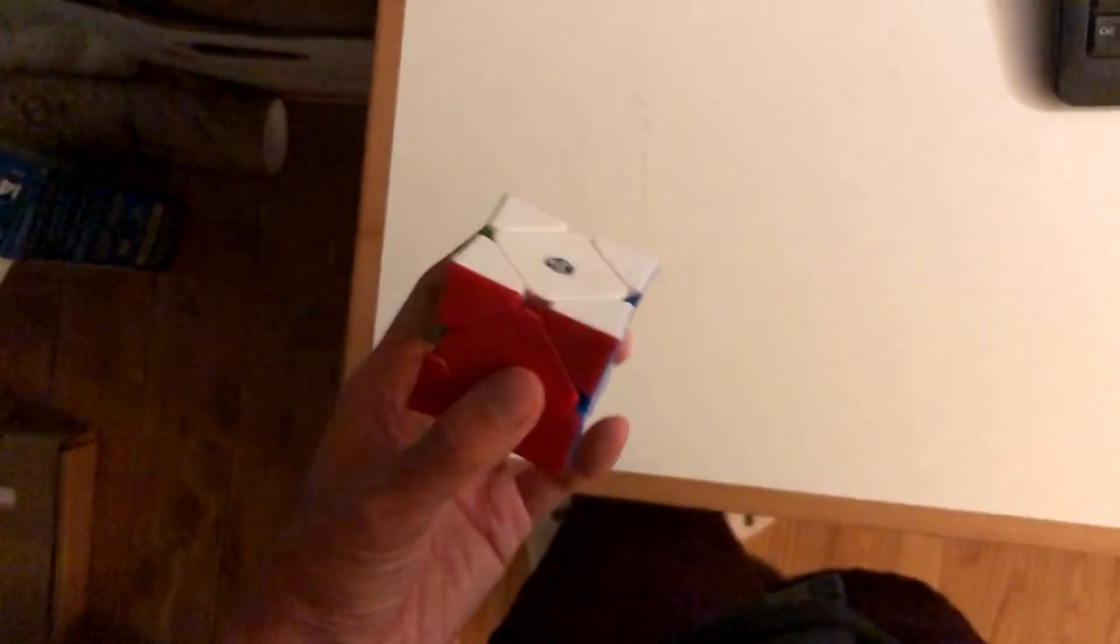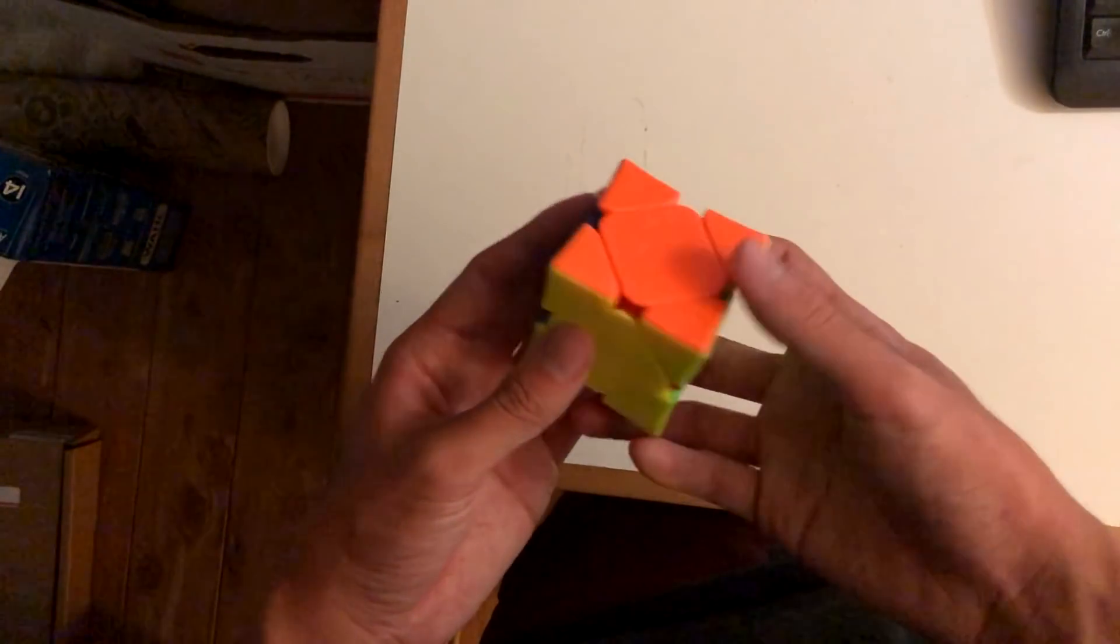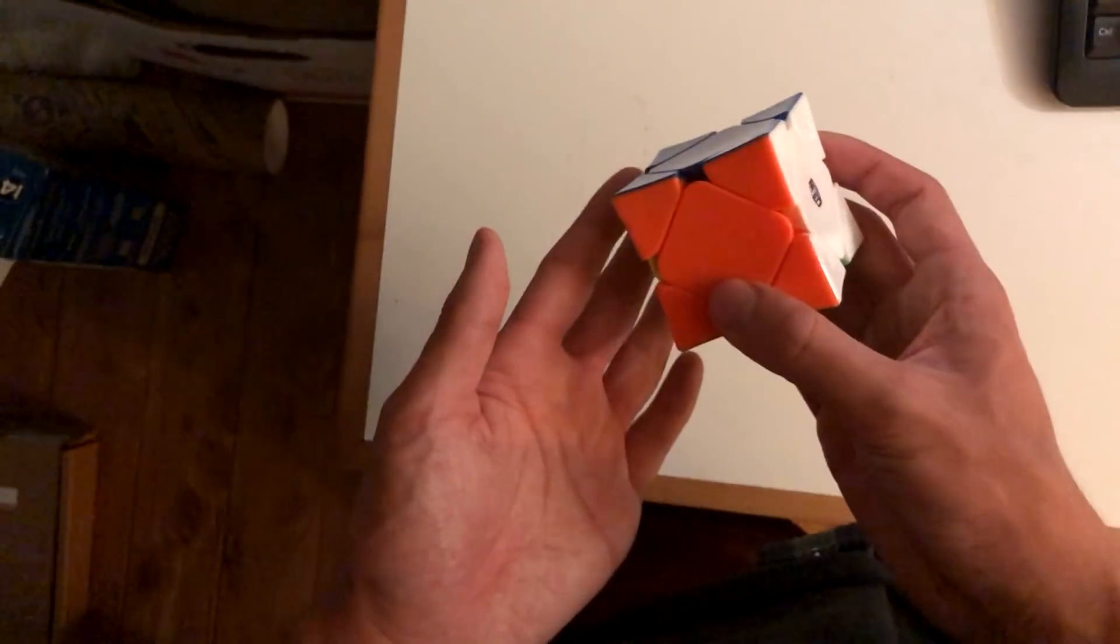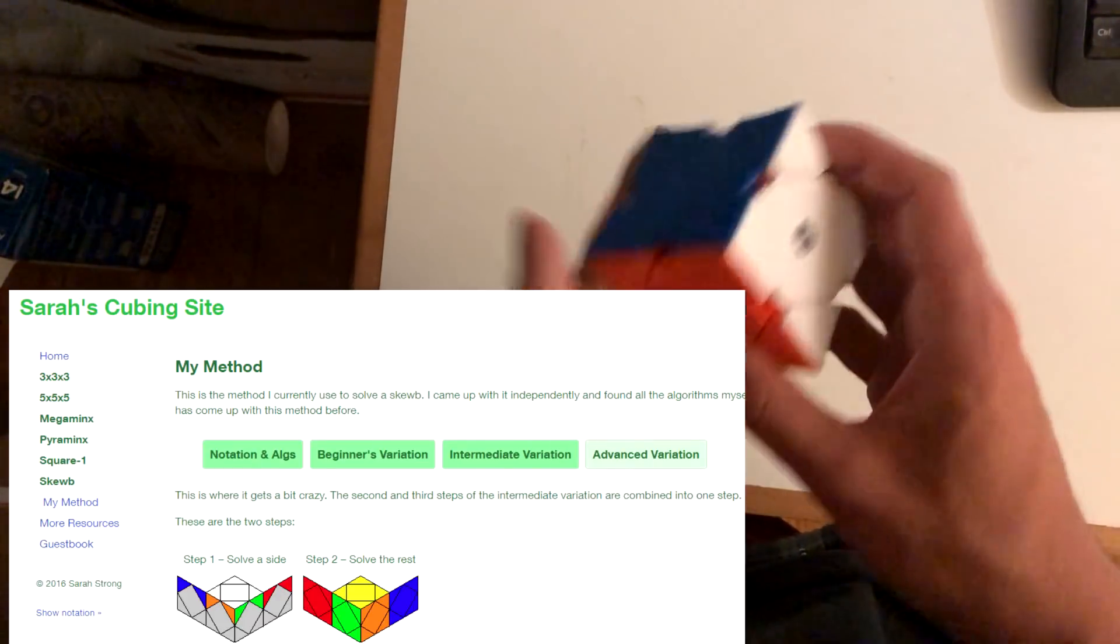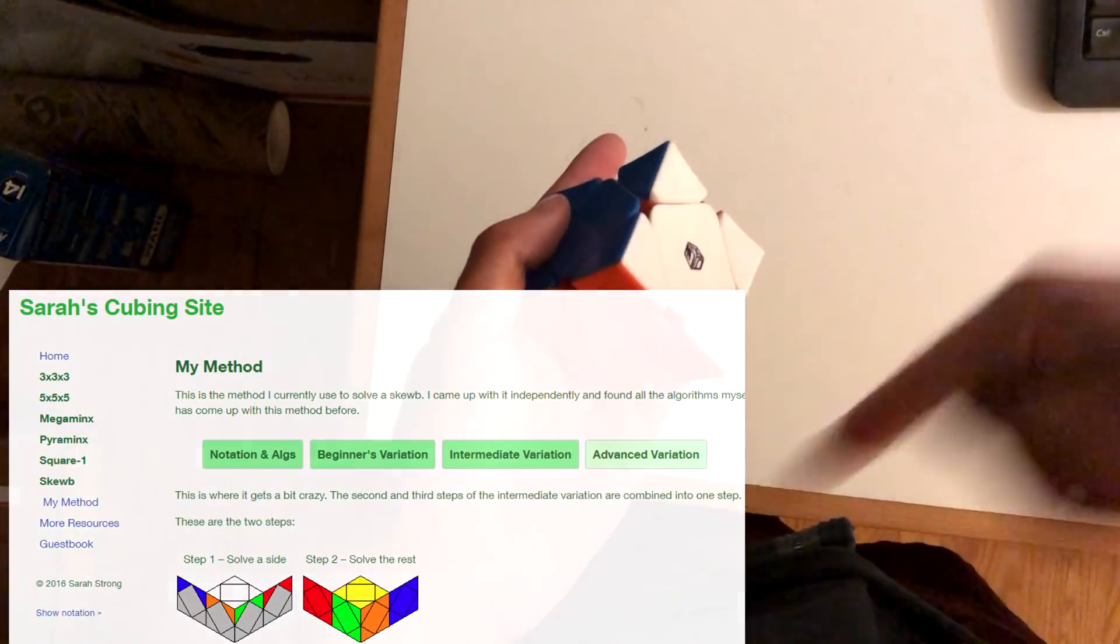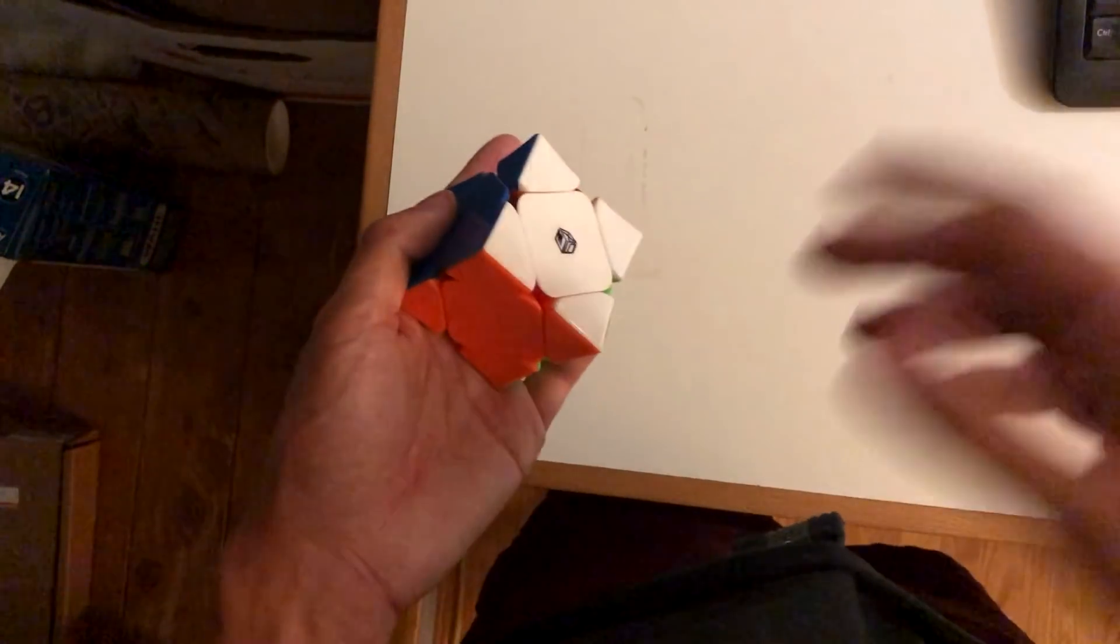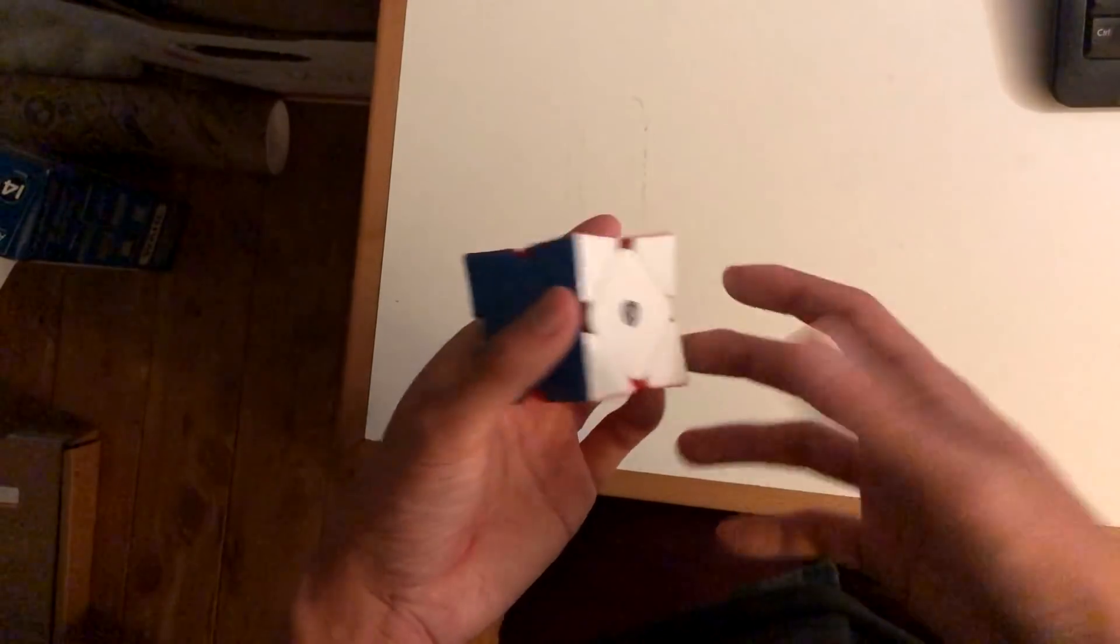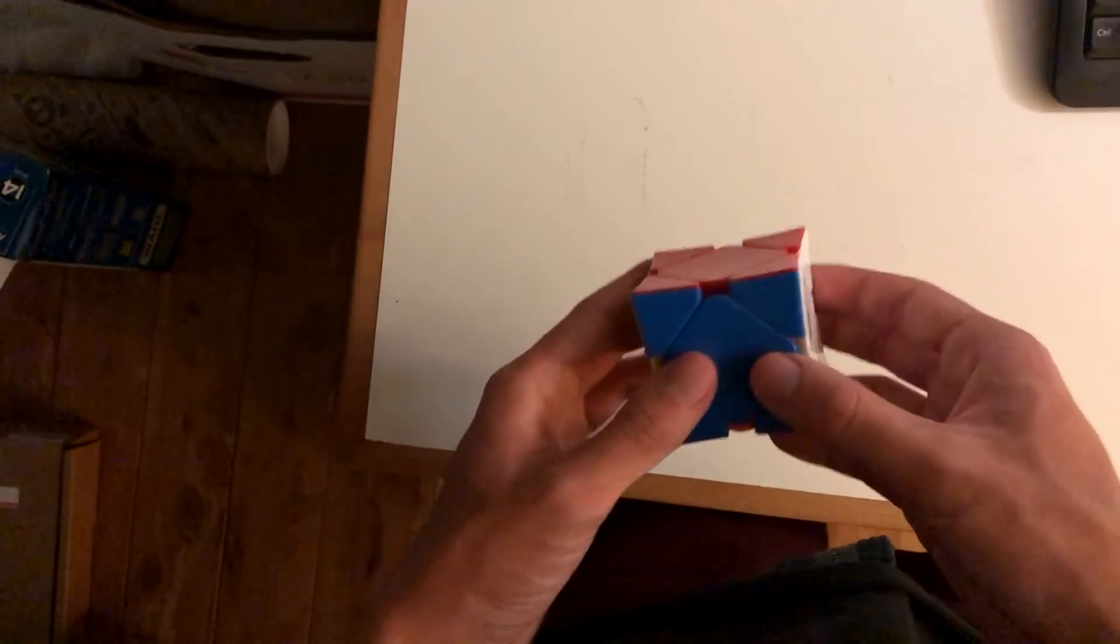I think it's pretty clear at this point that all the fastest SCUBE solvers solve with some variation of Sarah's advanced, where you solve one layer, and then you solve all of the rest with one algorithm. And I think there's like 300 algorithms. And I will admit that that's the most speed optimal method there is,